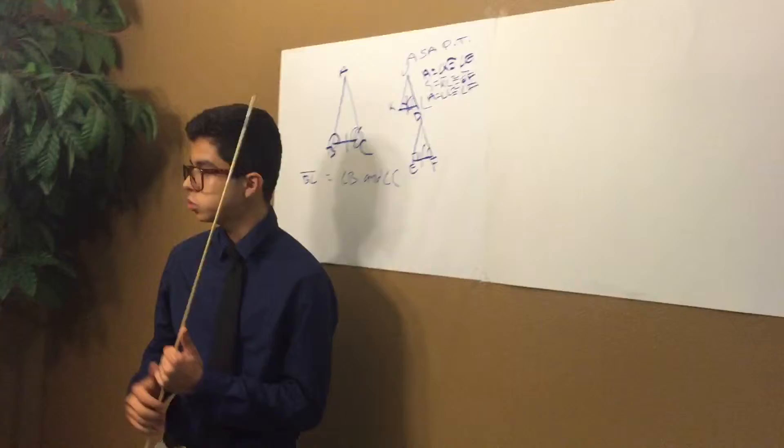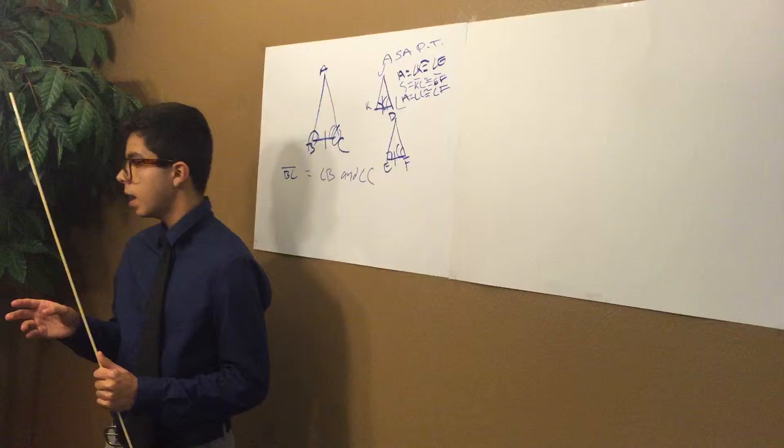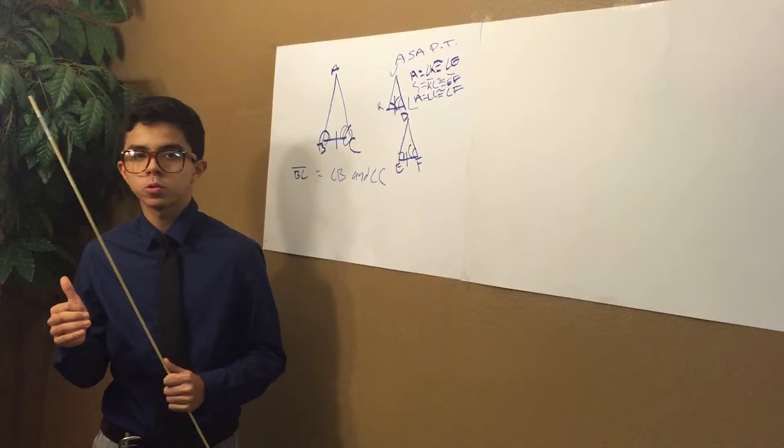That concludes angle side angle postulate. Now to lead on to angle angle side postulate. Angle angle side postulate is two angles and a non-included side of one triangle that can go into two angles and a non-included side of one triangle, which is triangle congruence.